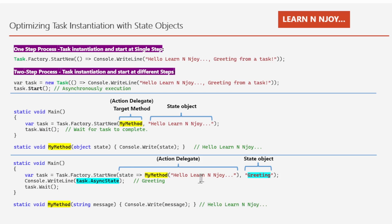Whatever parameter value we receive in myMethod2, we just print it to the console. So 'Hello Learn Enjoy' should get printed. And here in the state object I have written 'greeting'. We can access this state object using the task's asyncState property — that's what I've written with console.writeLine, printing task.asyncState, which will print 'greeting'. This approach allows for cleaner and more optimized task instantiation.